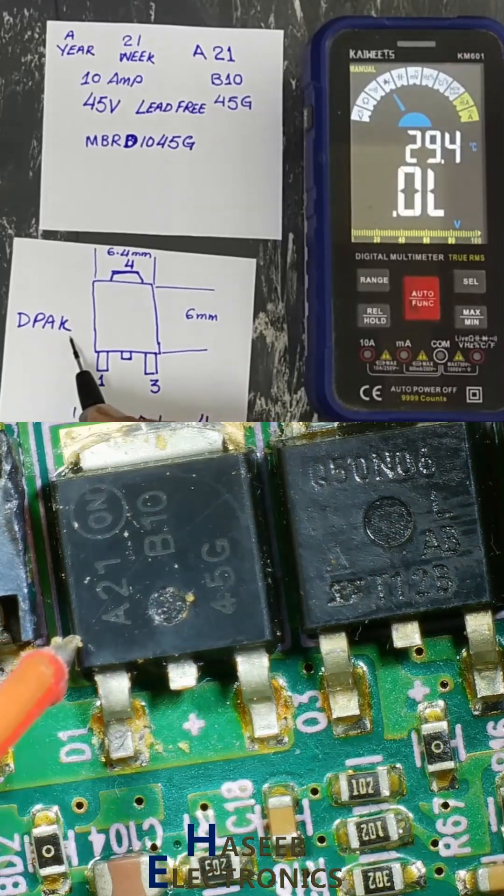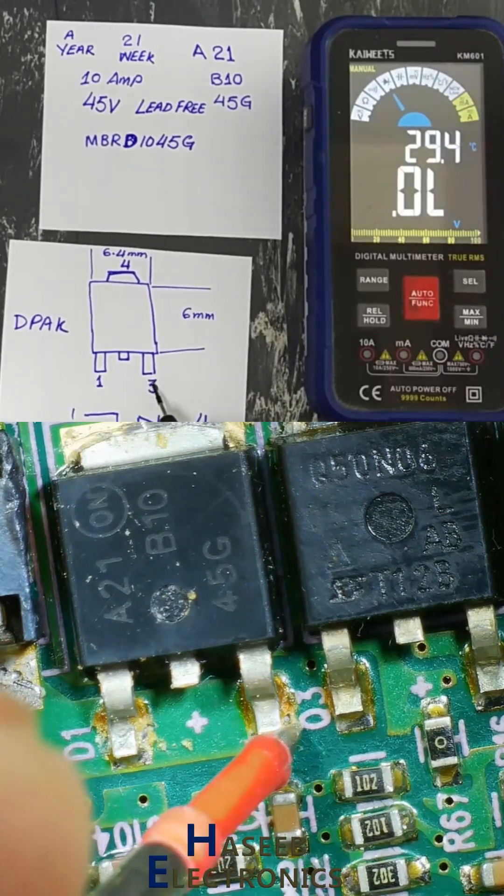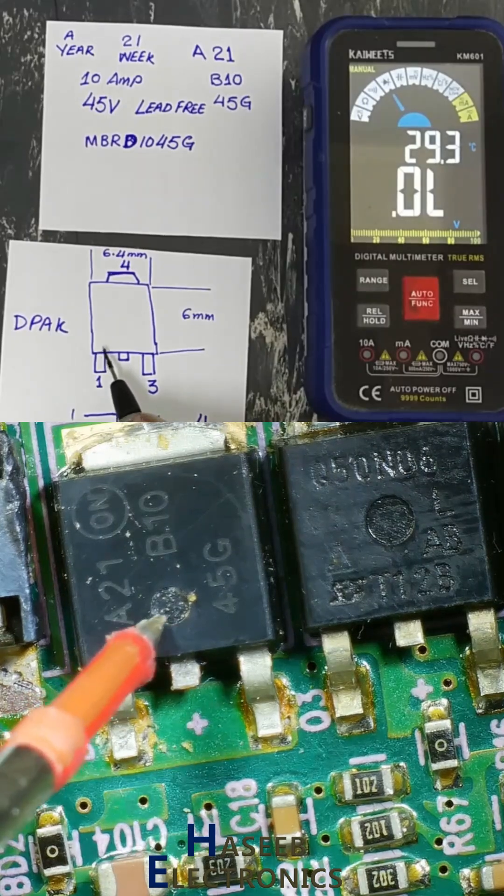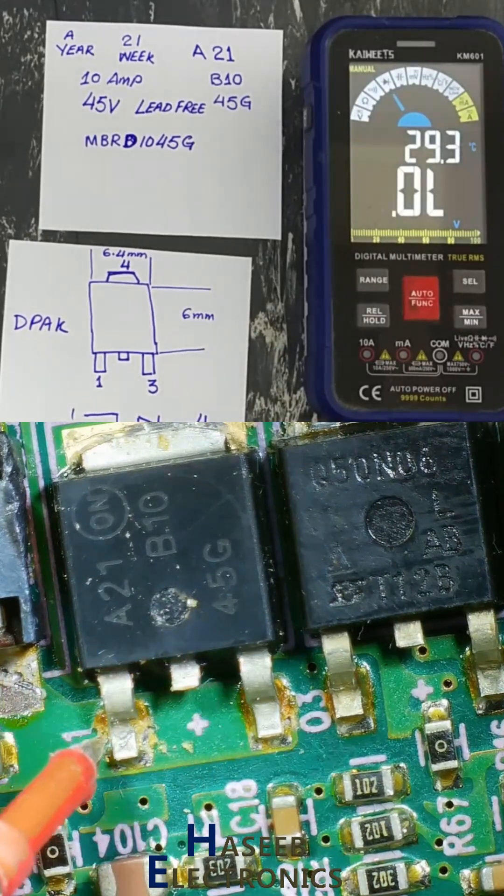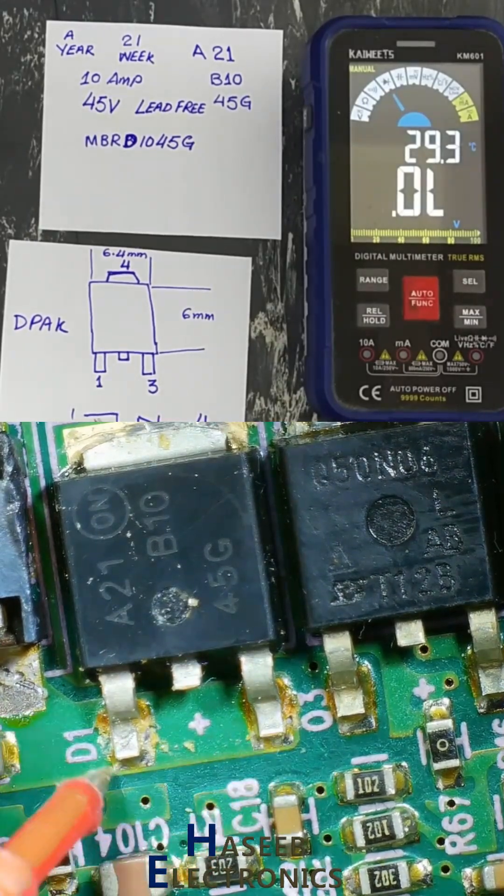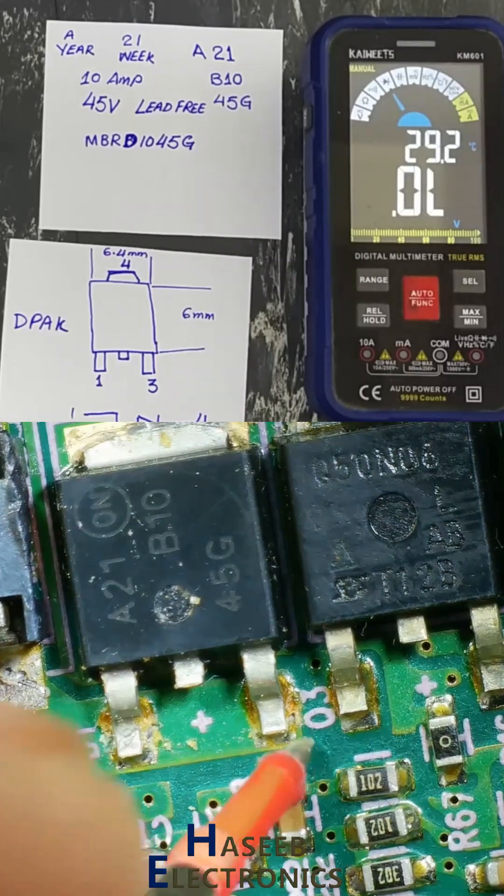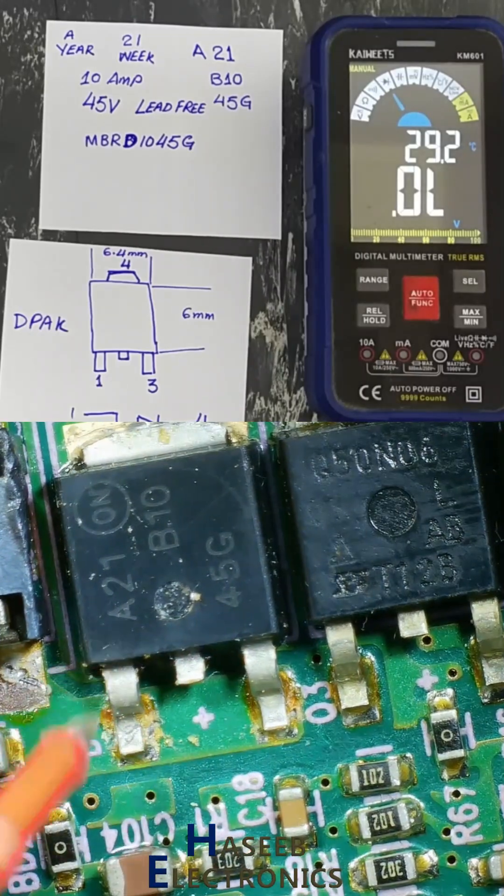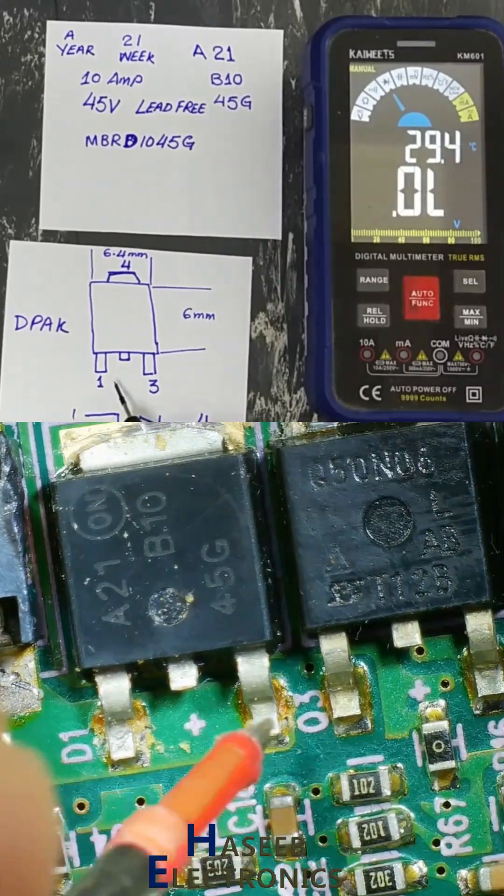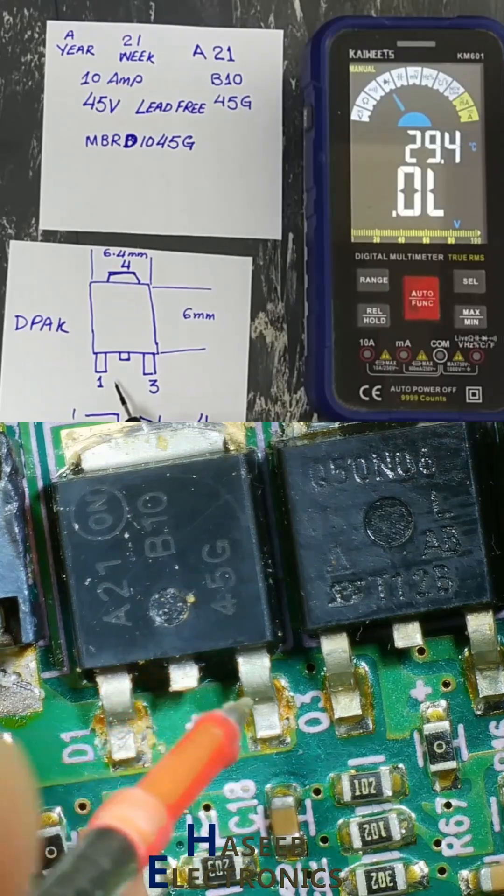Pin number one, pin number three. These pins are connected internally and these are also connected from the outside. Pin number one and three are connected internally and externally together. Pin number two not connected.